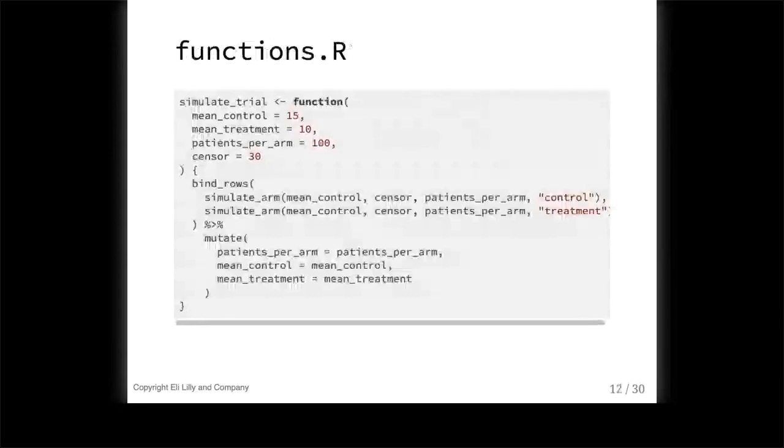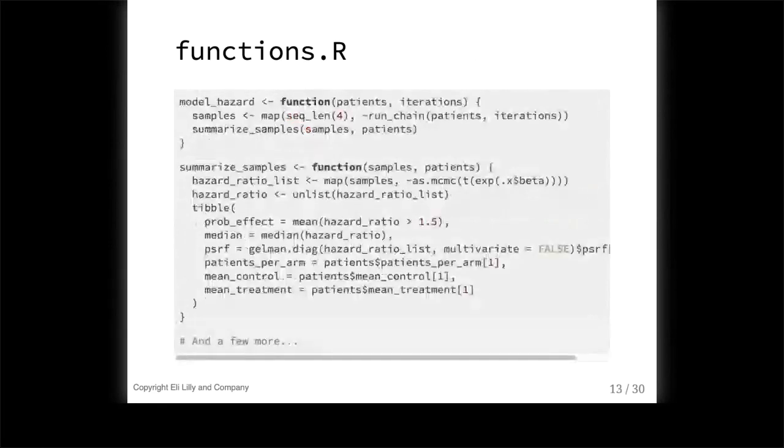Most of our functions revolve around three kinds of tasks: preparing data sets, analyzing data sets, and summarizing those analyses. And this is one of the top-level functions of the data piece. It accepts an easy-to-generate set of design parameters as arguments, and it returns a tidy data frame of simulated patient-level data. Inside the body, it calls another custom function called simulate-arm, which we define elsewhere in the functions file. Another custom function is called model-hazard. It actually fits the model, and it uses custom functions run-chain and summarize-samples to generate a one-row tidy data frame of the results for a single simulated trial. At this point, you already have something to take away and apply, even if you decide not to use Drake. This function-oriented style still has a lot of value.